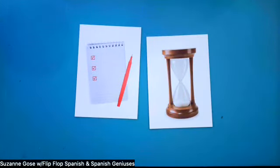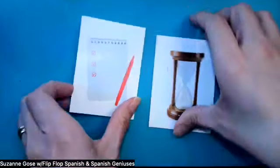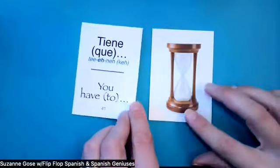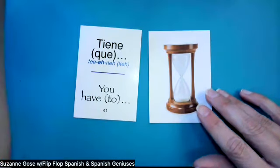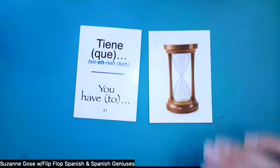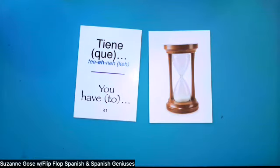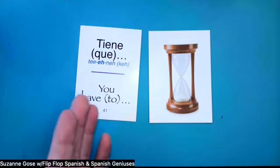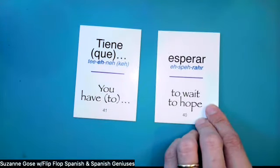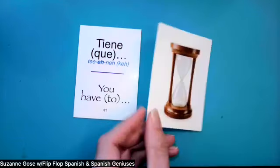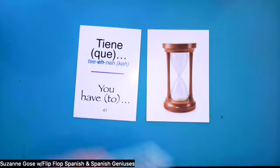Lesson three — you practiced the Roman road during lesson two. Today we're gonna talk about what you have to do. 'Tiene que' — you have to. This is formal and saying 'you have to' very politely. So if you're on a mission trip and you're trying to tell somebody that they have to wait, 'tiene que' is better. It also means 'to hope.' Tiene que — I have to.